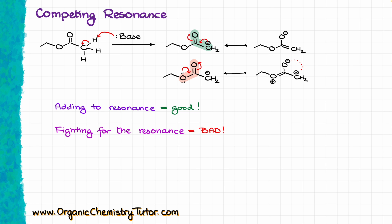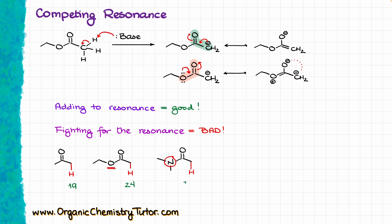The stronger the resonance stabilization within the carboxylic acid derivative functional group itself, the worse it is at stabilizing the alpha position enolate. For a simple ketone with no competing resonance, the pKa is around 19. For an ester, where the oxygen competes for stabilization, the pKa jumps to roughly 24. And for an amide, where the nitrogen's participation in resonance is quite significant, pulling off the alpha proton is even more unfavorable — the pKa is 25 or 26, depending on the exact structure.